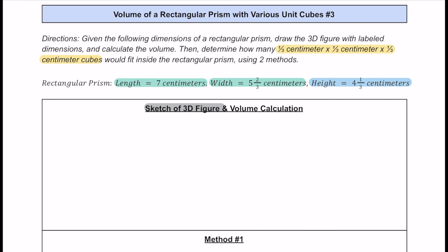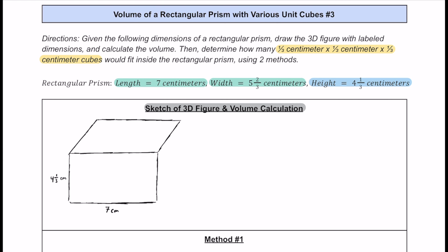Before we look at those unit cubes, let's make a sketch of this figure and figure out the volume of the prism first. Here we have a rough sketch. The length is seven centimeters, the width is five and two-thirds centimeters, and the height is four and one-third centimeters.